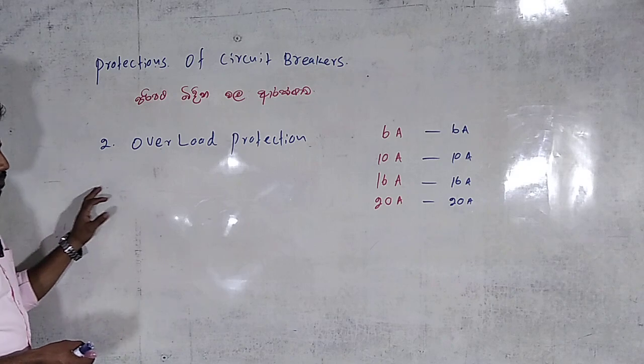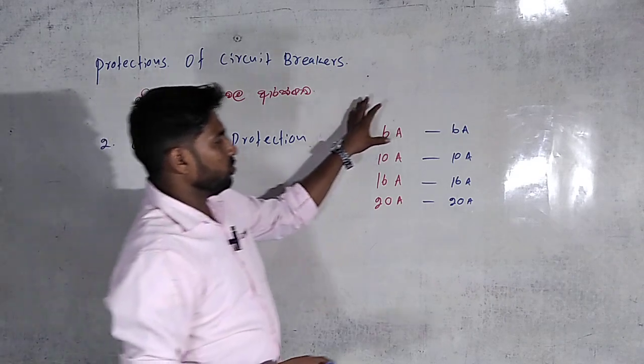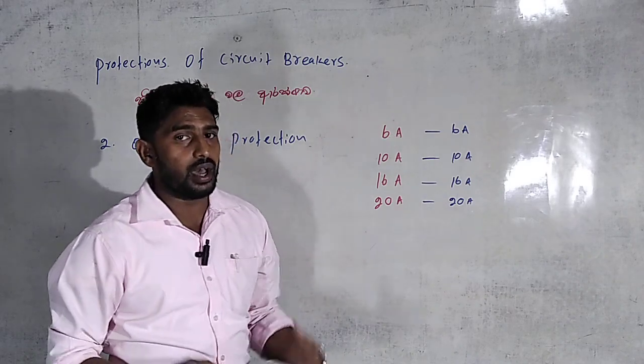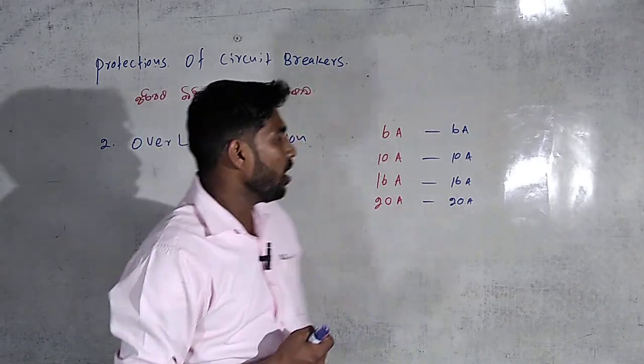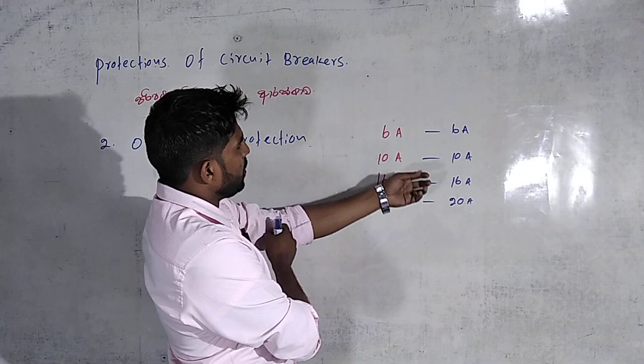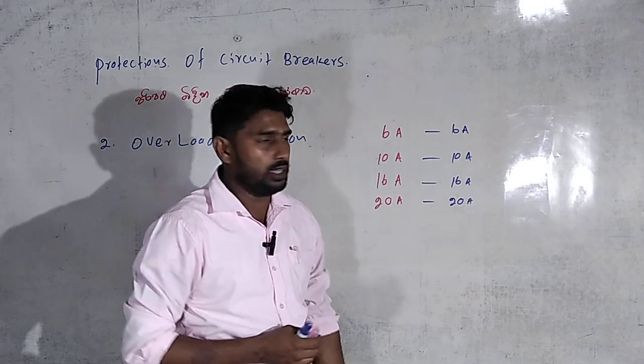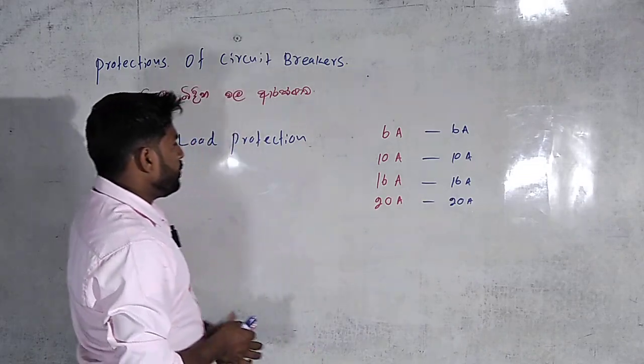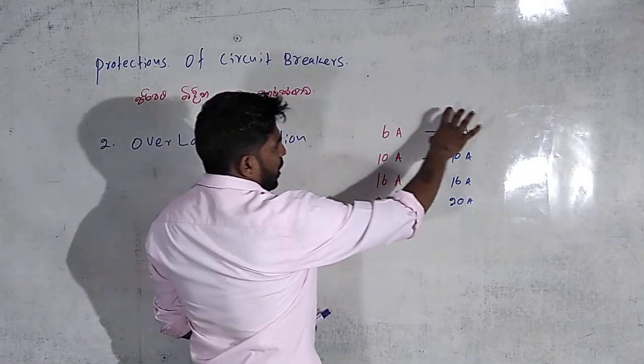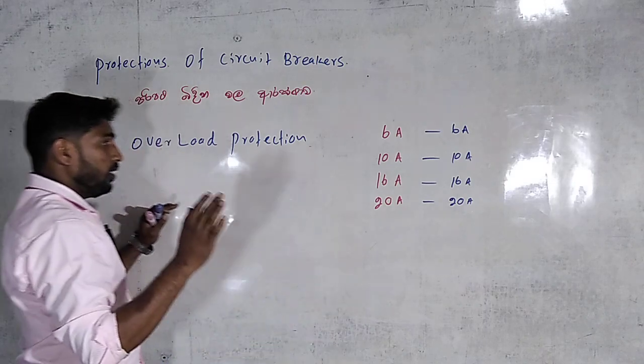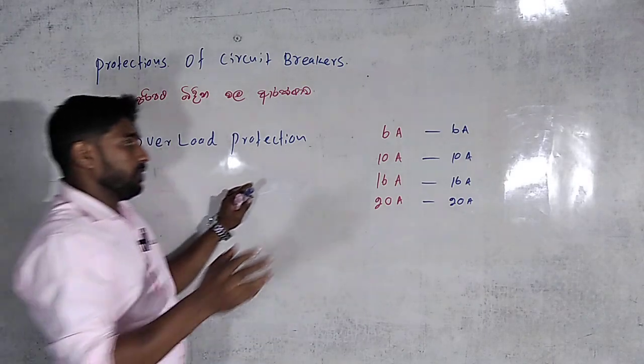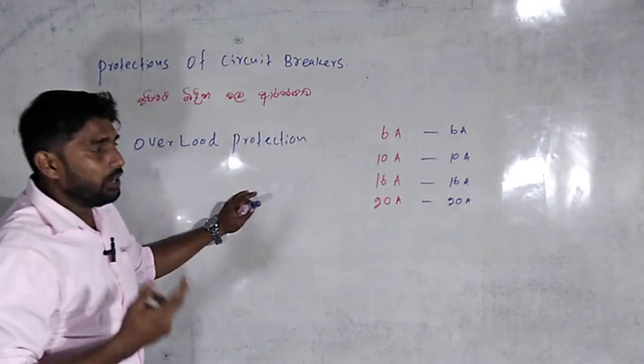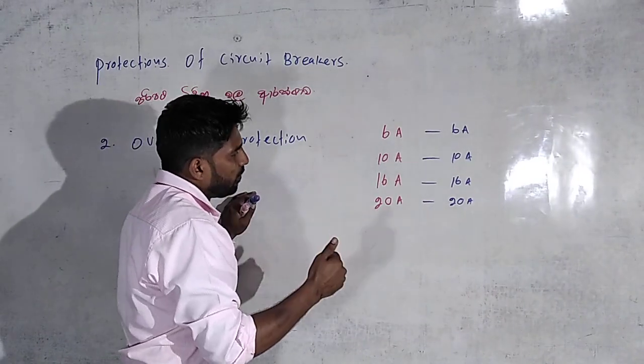When you get the 6 ampere breaker, if you have 6A breaker and you will use the 6A breaker, you will have it on. But if you have an 8A breaker, it is not able to find the ampere height.